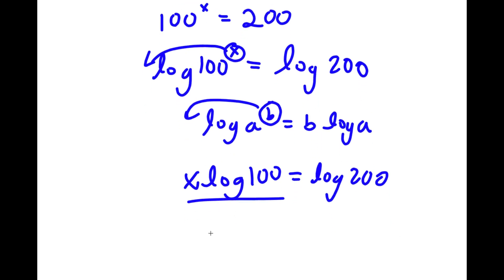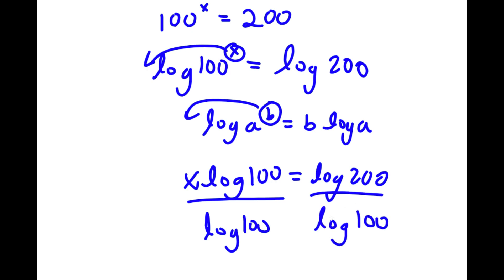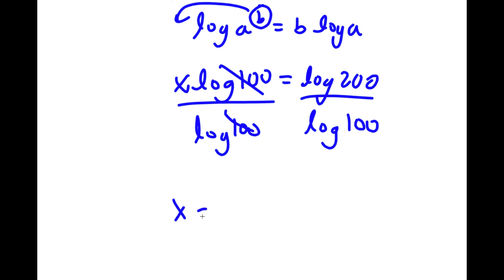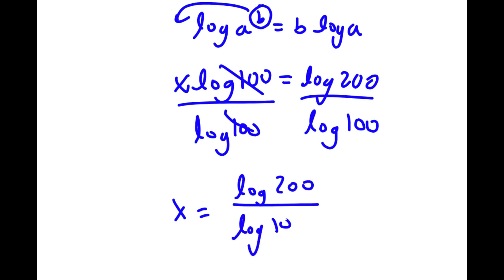Now if I divide both sides by log 100, these two cancel out and I have x is equal to log 200 over log 100.